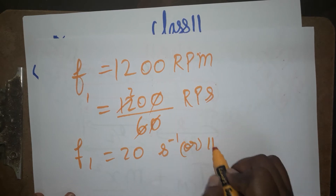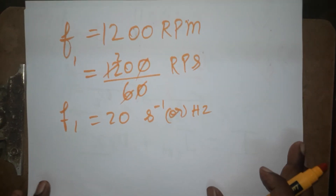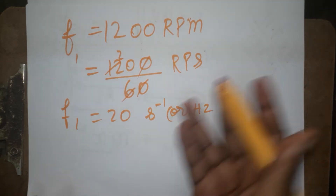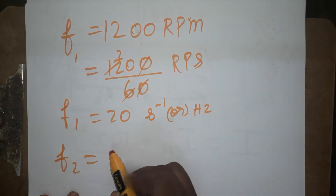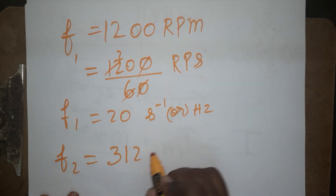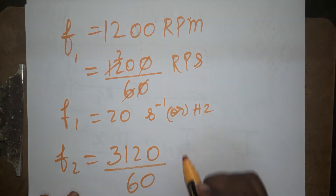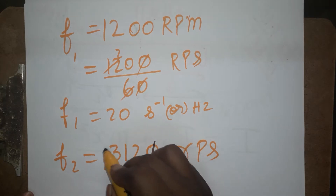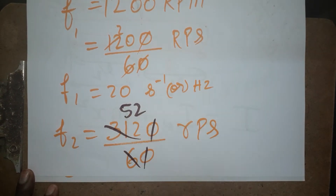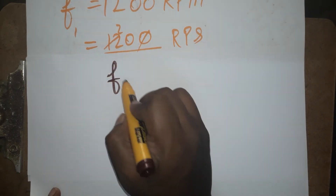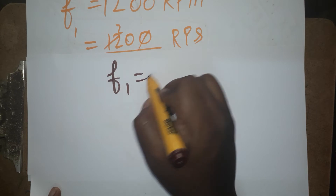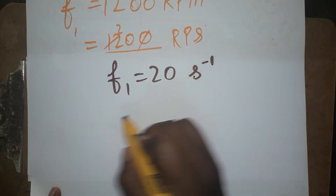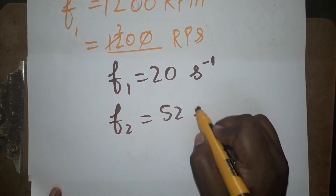Similarly, the final speed is 3120 RPM. Dividing by 60 to convert to RPS, the zeros cancel and we get 52. So frequency f2 is 52 per second. To summarize: frequency f1 is 20 s⁻¹ and frequency f2 is 52 s⁻¹.